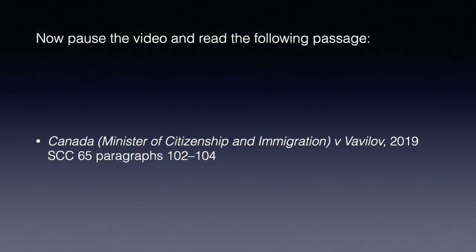Finally, in terms of the guidance on reasonableness review, the majority considers two different kinds of failure of rationality. The first is where there is a failure of rationality internal to the reasoning process. The second is where the decision is untenable in the light of the legal and factual circumstances. The first of these is considered at paragraphs 102 to 104 of Vavilov. There are a couple of things worth noting. First, it is not the case that any little flaw in the reasoning will impugn a decision. Reasonableness review is not, as the court put it, a line-by-line treasure hunt for error, and the reviewing court should not expect administrative decision makers to be academic logicians.